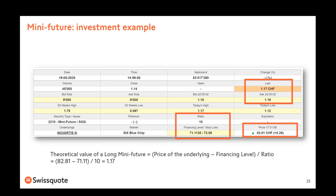How to calculate the total value of a long mini future: take the price of the underlying security, subtract the financing level, and divide the result by the ratio — which is ten. So: 82.81 minus 71.11, divided by ten, equals 1.17. It's important to know how to calculate the theoretical value, so you can verify whether the issuer's current price matches this formula or place a limit order at the correct level.